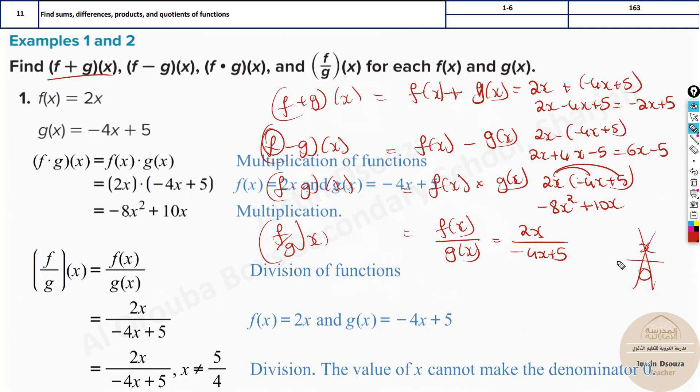Because when you divide anything by 0 it will be an extremely large number. It goes up to infinity. It's not possible. So it's undefined value. Now here in the denominator minus 4x plus 5. This cannot be equal to 0. This entire term.